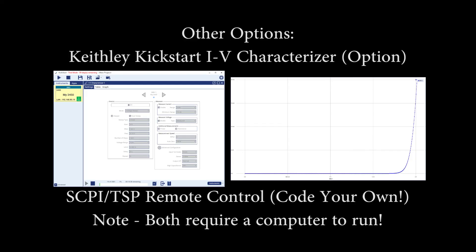If you can use a computer, there are a number of other possibilities, including the IV characterizer feature within Keithley Kickstart. This software is offered with a trial period, but otherwise requires a license. Or, you can break out your coding skills and command the instrument directly over SCPI or TSP remote control and code your own solution.